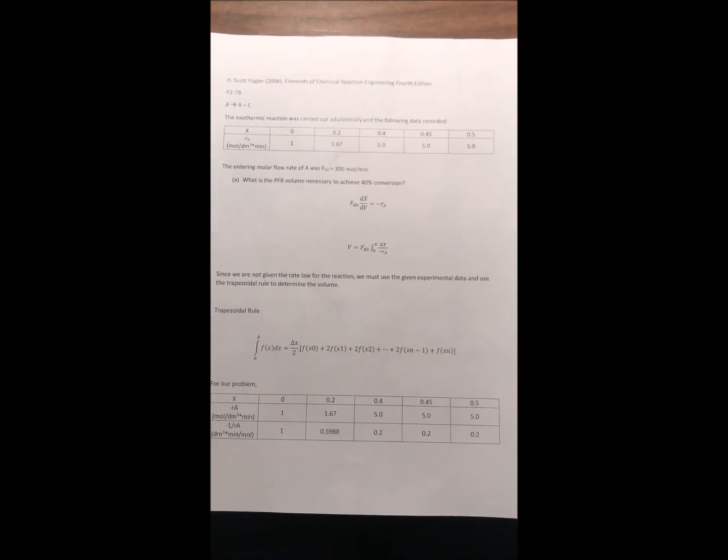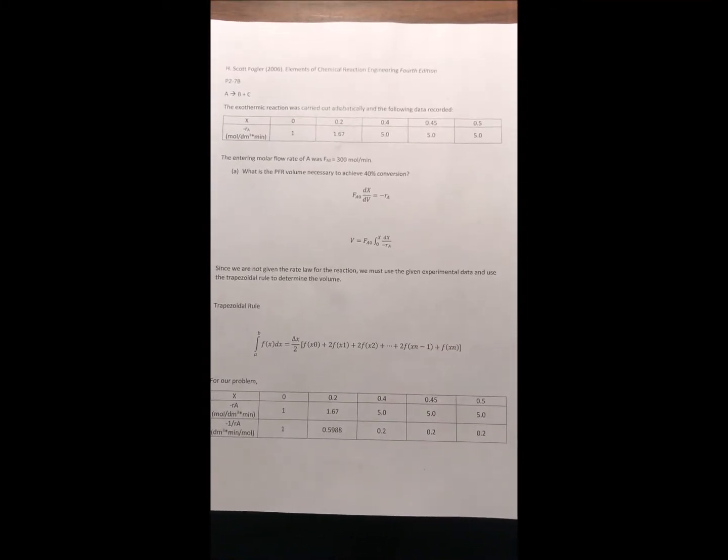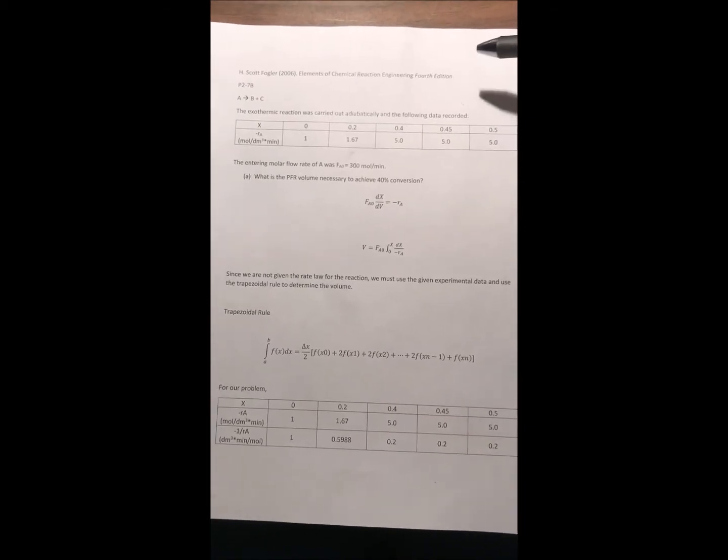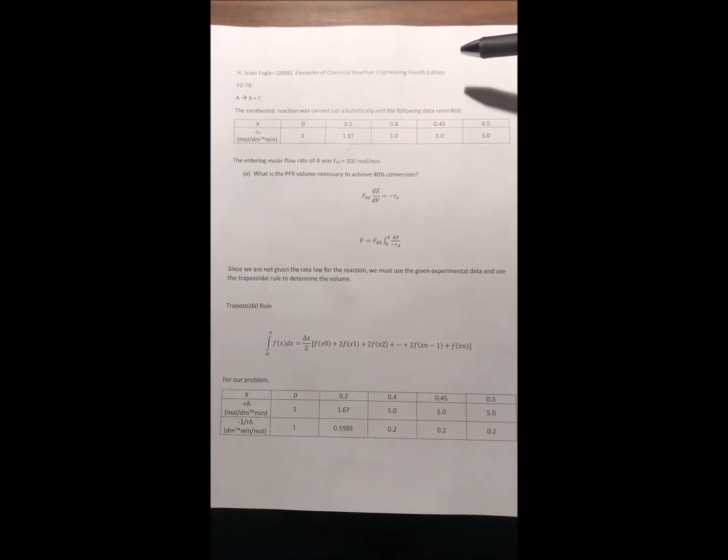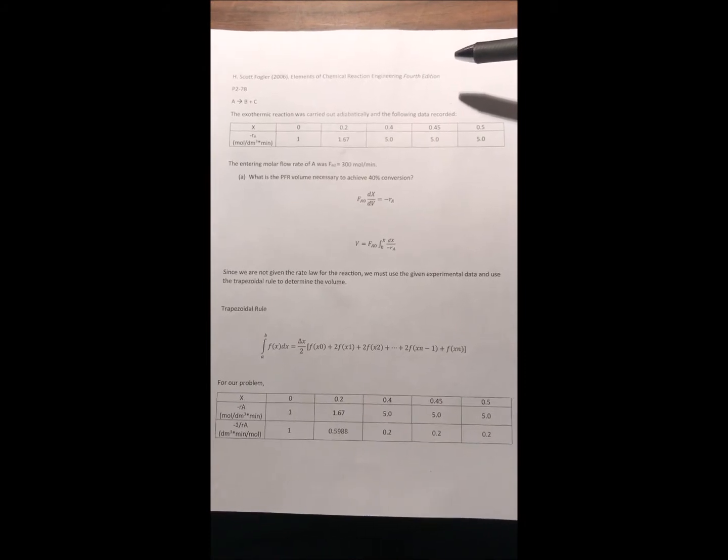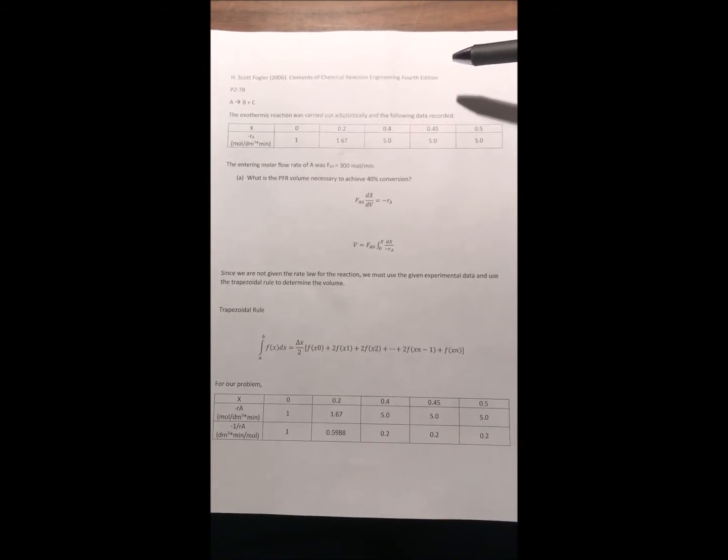Hello everyone. Today I'll be showing you how to do a practice problem from Scott Fogler's book Elements of Chemical Reaction Engineering. The practice problem I'll be doing is number seven B from chapter two.